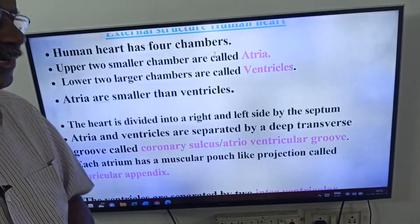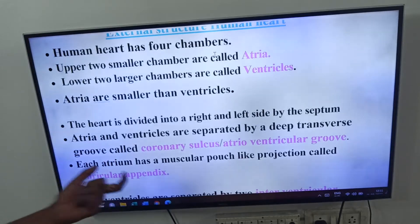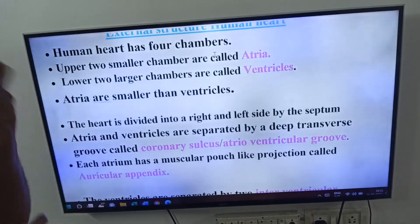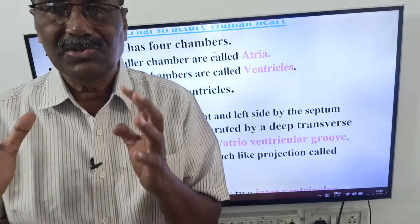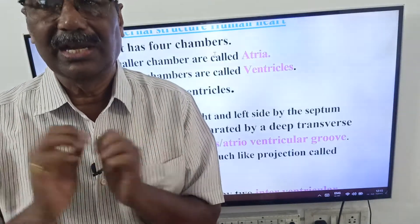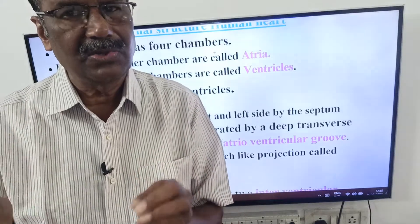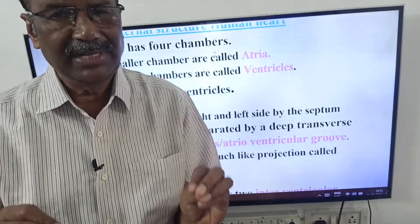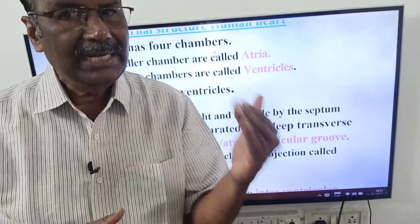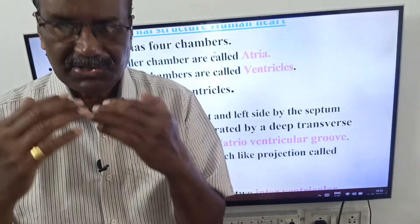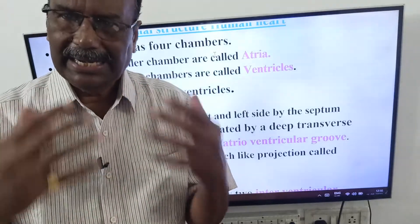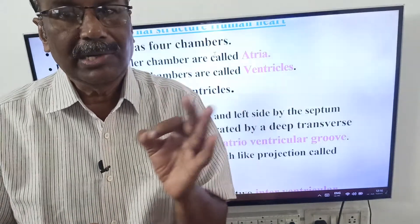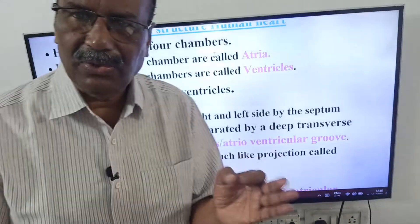Atria and ventricles are separated externally by a deep transverse groove called the coronary sulcus, or atrioventricular groove. This coronary sulcus is present in between the atria and the ventricles, separating the upper atria from the lower ventricles from the outside.